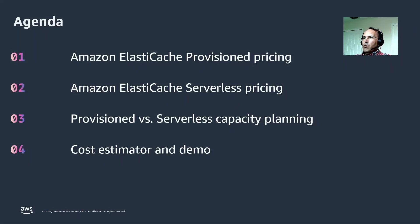First, I'm going to review the pricing model for the provisioned ElastiCache. Then I'm going to have a review of ElastiCache serverless pricing model. Then I'm going to compare the serverless versus provisioned pricing model from a capacity perspective — capacity planning, which of course translates into cost. Then I'm going to review the cost estimator tool, what it does, how it works, and then a quick demo of it.